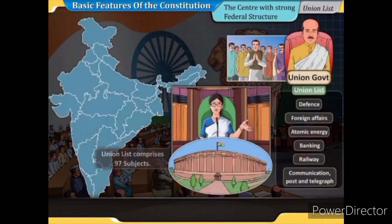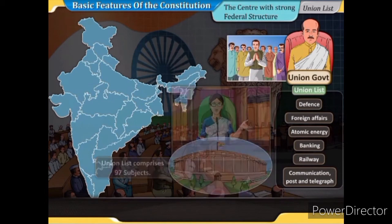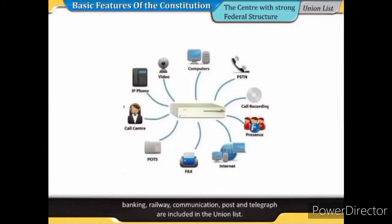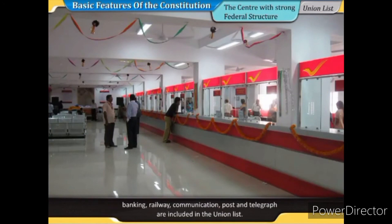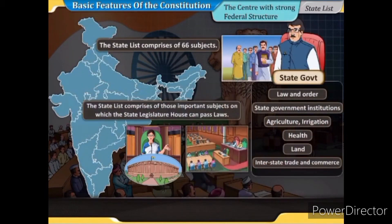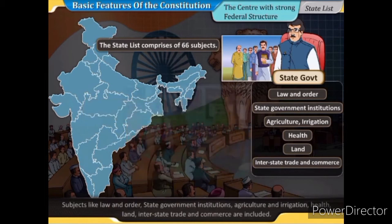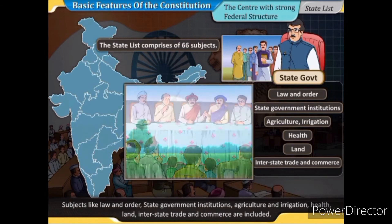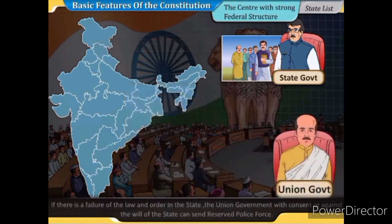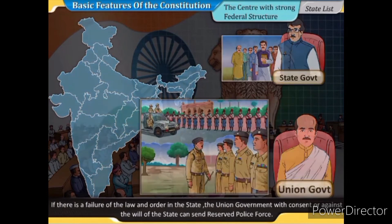The Union List comprises 97 subjects of national importance like defence, foreign affairs, atomic energy, banking, railways, communication, post and telegraph. The State List comprises 66 subjects on which the state legislature can pass laws, including law and order, state government institutions, agriculture, irrigation, health, land, and interstate trade and commerce. If there is a failure of law and order in the state, the union government — with or without consent — can send reserved police force.